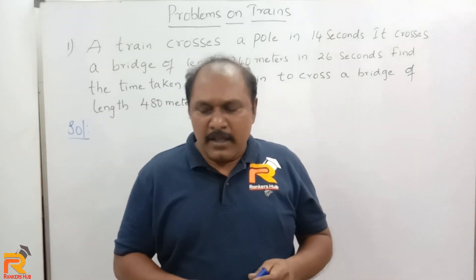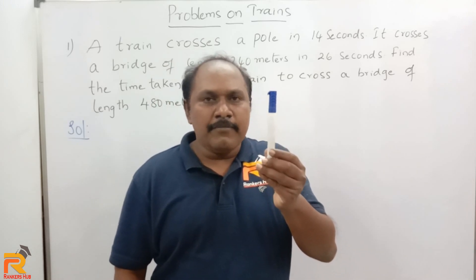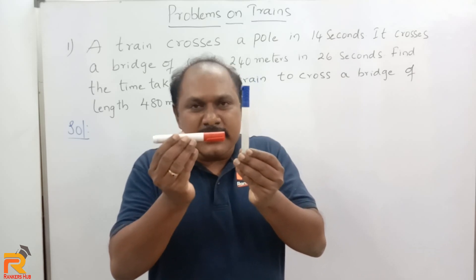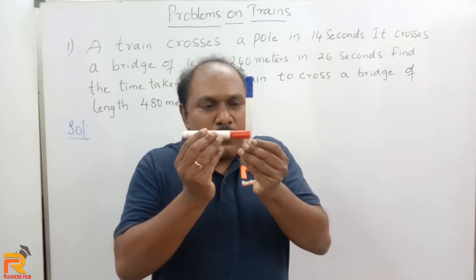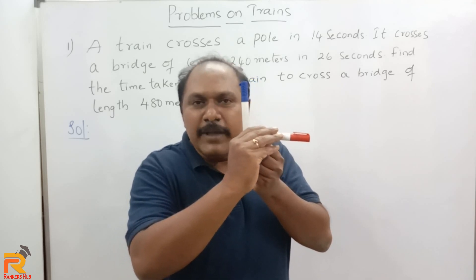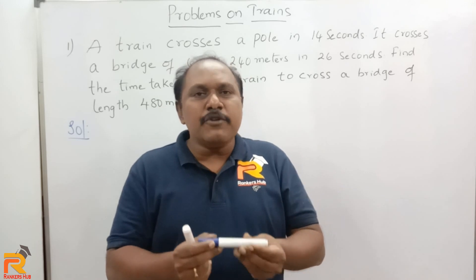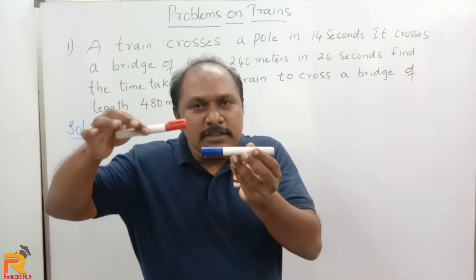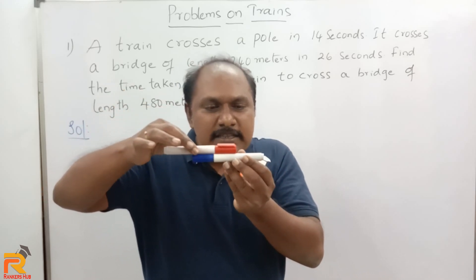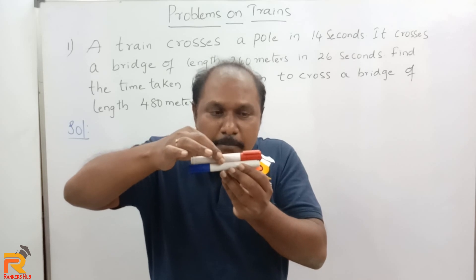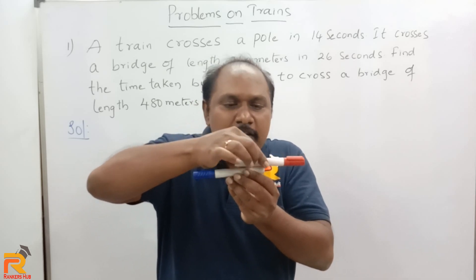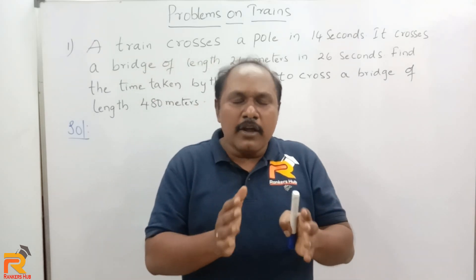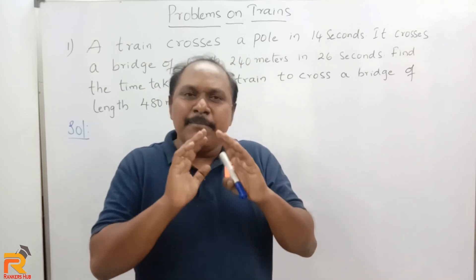Now before we look into the questions, let's talk about some basic points. If there is a pole and a train has to cross this pole, what is the distance the train has to travel? Definitely, to cross a pole, the distance the train has to travel would be the length of the train. Next, if there is a bridge, to cross a bridge, the train has to travel a distance equal to the length of the bridge — but that alone is not enough.